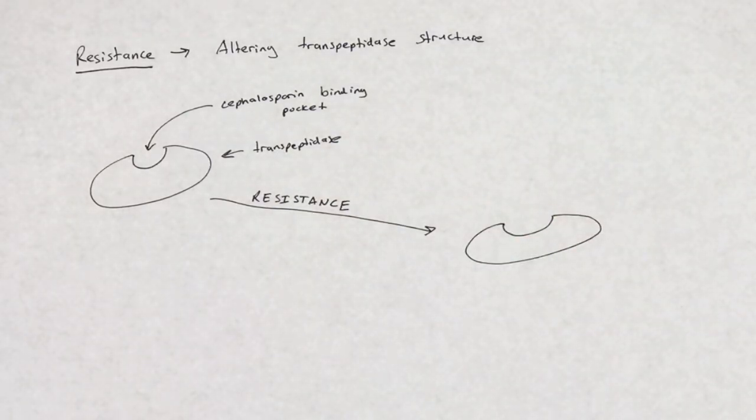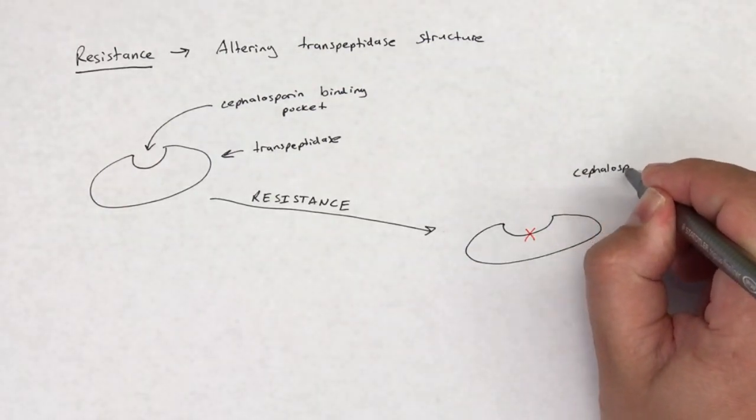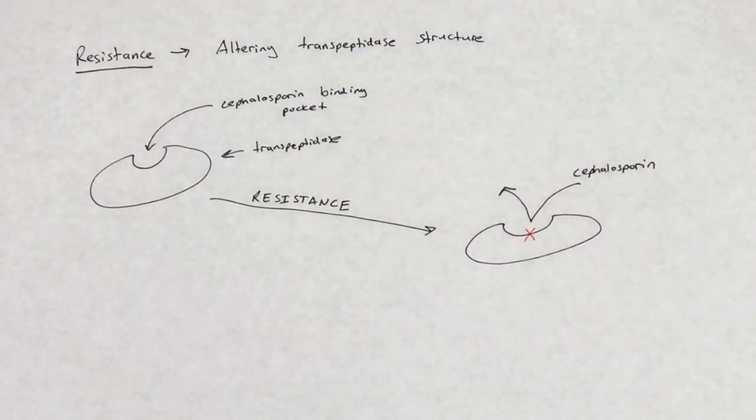If a cephalosporin is unable to bind to transpeptidase, then the cephalosporin is unable to inhibit cell wall synthesis.